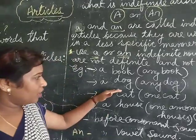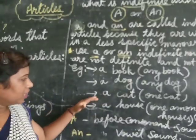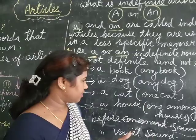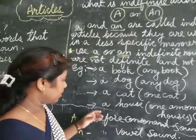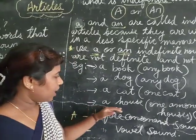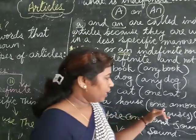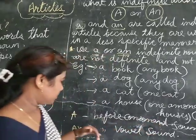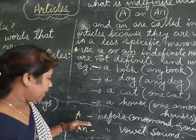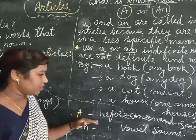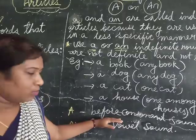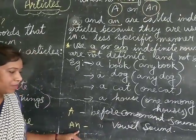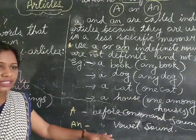A dog — any one dog. A cat — any cat. A house — one among many houses. 'A' is used before a consonant sound.